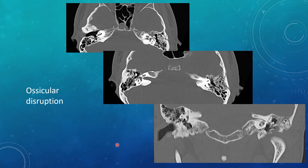To look for ossicular disruption, look for that ice cream cone on the axial view. You can see a complex temporal bone fracture pointing to the ossicles, with widening of that malleoincudal joint — so the ice cream could slip off the cone. On the normal side, there's very little space between them. Here you can see a clear lucent line in the malleoincudal joint, and on the coronal, the complex fracture points straight towards it. This is a subtle sign of ossicular disruption to look for with any temporal bone trauma.